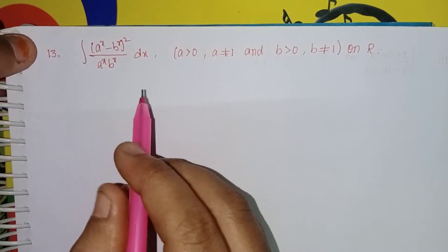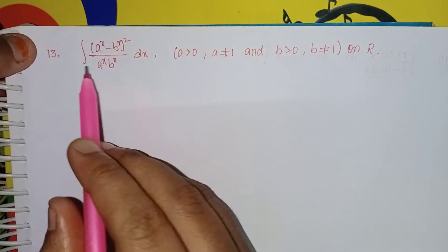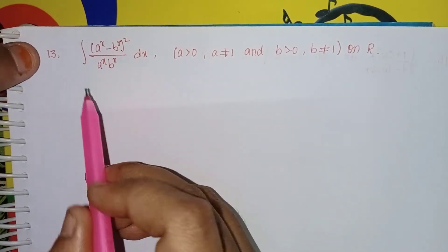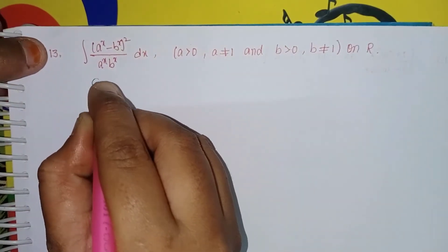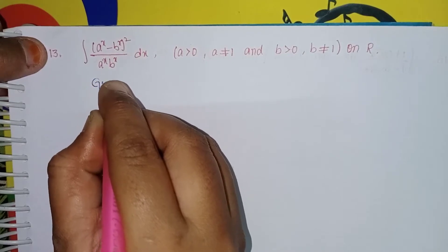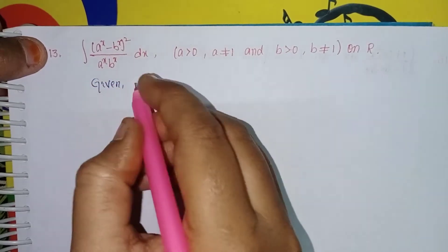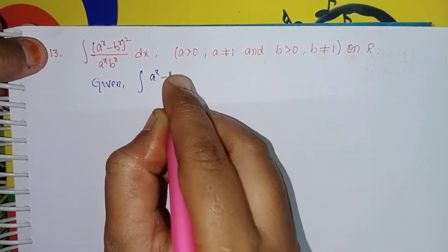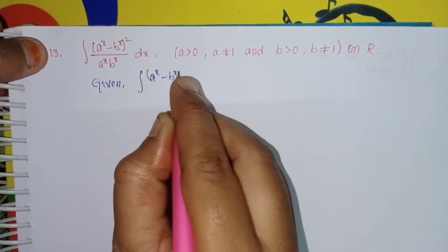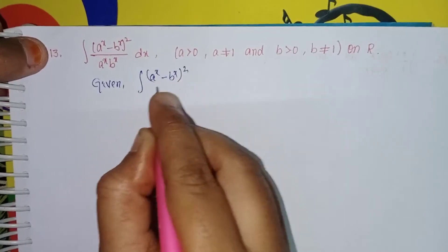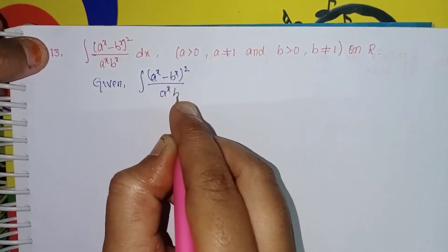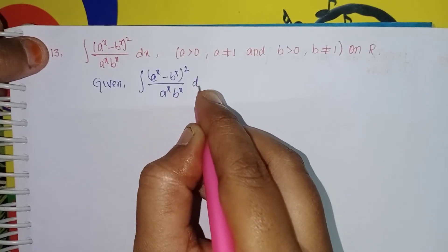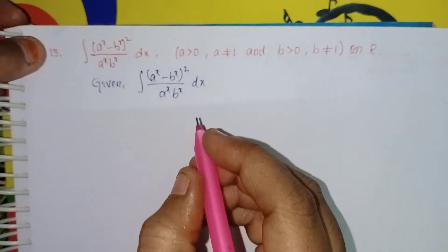The given integral is: (a^x minus b^x) whole square, divided by (a^x into b^x), whole into dx.